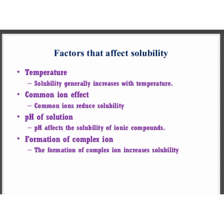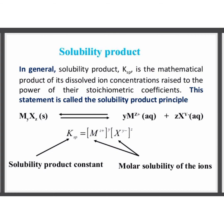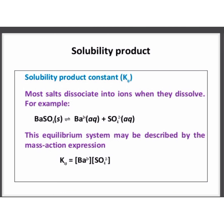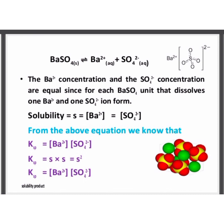Solubility generally increases with temperature. The common ion effect reduces solubility. pH affects the solubility of ionic compounds, and the formation of a complex ion increases solubility. The solubility product Ksp is the mathematical product of the dissolved ion concentrations raised to the power of their stoichiometric coefficients — this is called the solubility product principle. For example, barium sulfate solid dissociates into Ba²⁺(aq) and SO₄²⁻(aq), so Ksp = [Ba²⁺][SO₄²⁻].